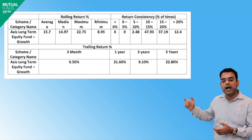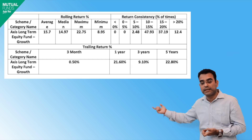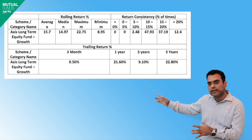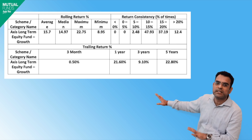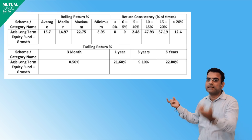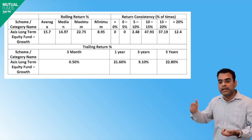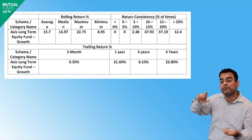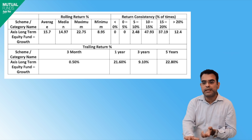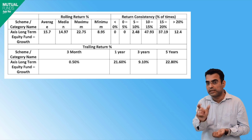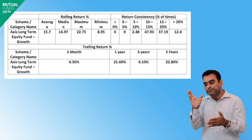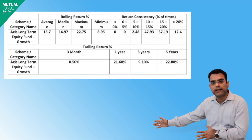Is data ko samajhne ke baad hume probability milti hai — ki is fund ne kitne times kitna percentage return offer kiya. Jaise hum dekh sakte hain, 5–10% return range mein is fund house ne 2.48 times returns diye. Yani ki 2.48% probability hai ki hamari return kisi bhi existing scenario mein 5–10% ke beech rahegi. Lekin 10–15% return range mein — jo aap dekh sakte hain — woh 47% hai. Yani ki agar hum kisi bhi time pe apne fund mein invest karein, hamari probability of getting 10–15% returns 47% hai. Yeh hamare fund ki healthy return hai.